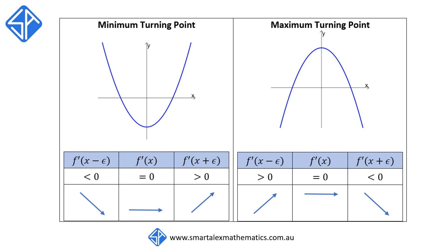For a minimum turning point, the function is decreasing on the left-hand side of the stationary point and increasing on the right-hand side. This means that on the left, the value of f'(x) is going to be negative, and on the right, the value of f'(x) is going to be positive.